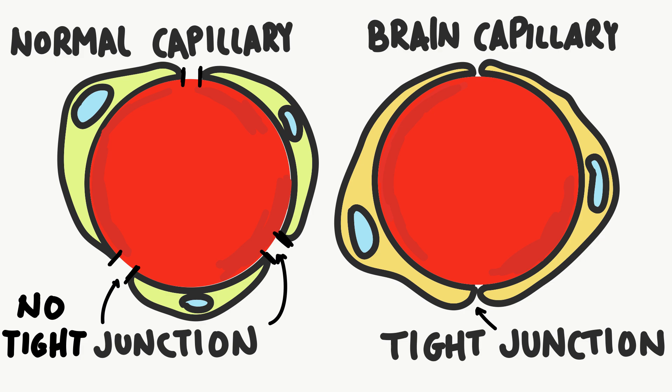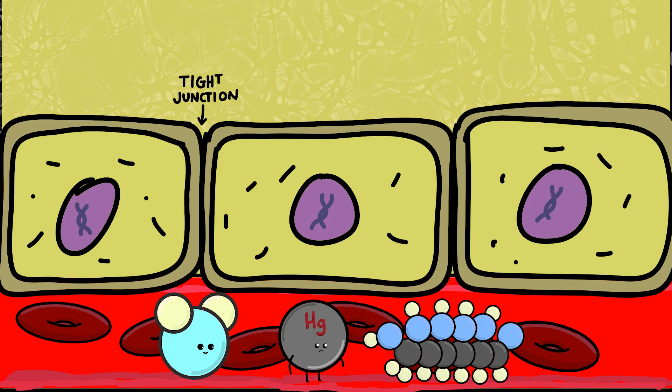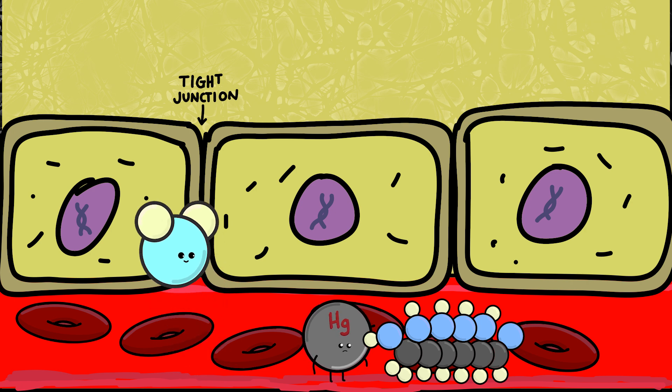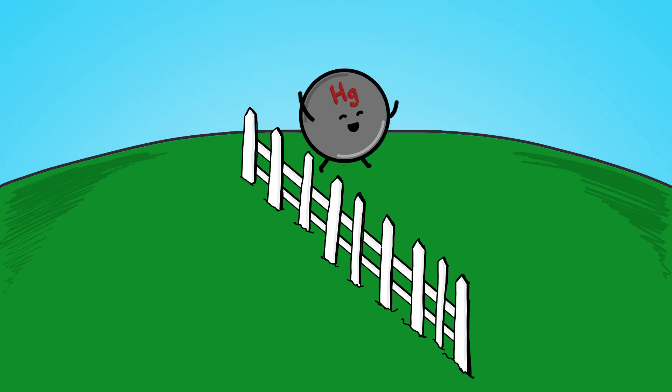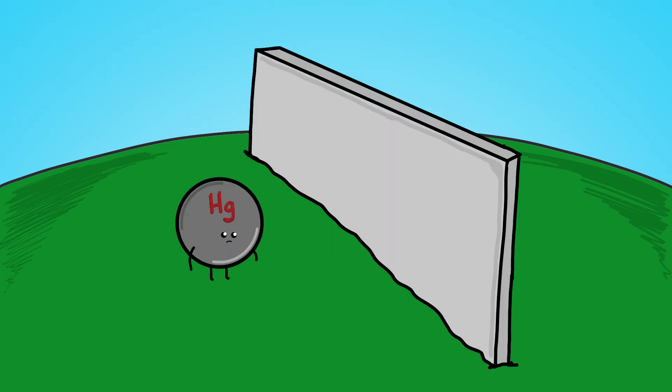It turned out to be what we now call tight junctions, tightly packed together cells which left almost no space for materials to pass through. Water, glucose, and some important amino acids could pass through, but it kept those bad neurotoxins out. The barrier wasn't a picket fence, it was more like a solid steel wall.